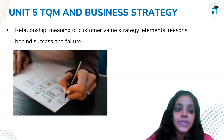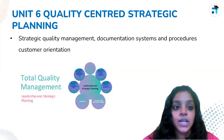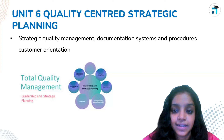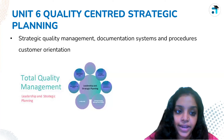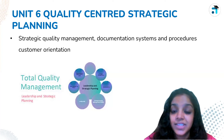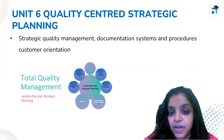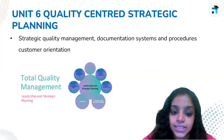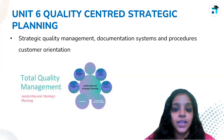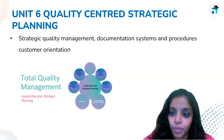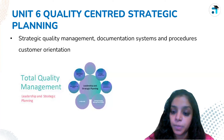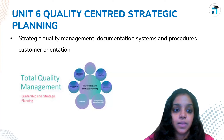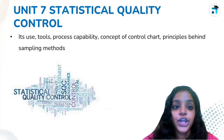Unit 6 is Quality Center and Strategic Planning. This covers strategy and quality management in our organization, including the documentation system, procedures, and all the processes we discuss.